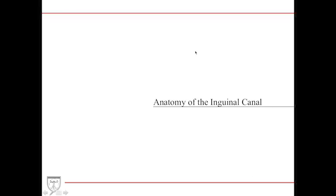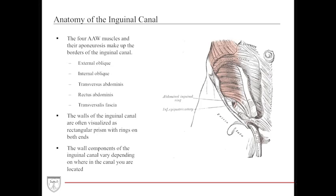The anatomy of the inguinal canal is very unique and is composed of the four anterior abdominal wall muscles, their aponeuroses, as well as the transversalis fascia. The walls of the inguinal canal are often visualized as a rectangular or cylindrical prism with rings on both ends — the superficial and the deep inguinal rings. The wall components may vary depending on what resource you use and what location you are in the canal.